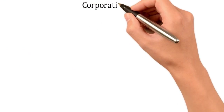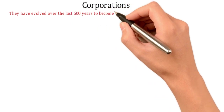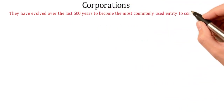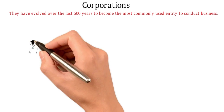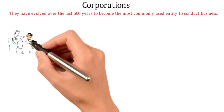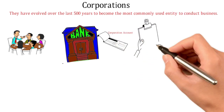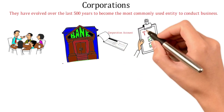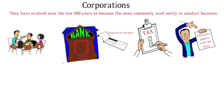Corporations have evolved over the last 500 years to be the most commonly used entity to conduct business. When utilizing corporations, corporate formalities must be followed. This includes holding regularly scheduled meetings, conducting banking through a separate corporate bank account, filing a separate tax return, and filing corporate papers with the state on a timely basis.